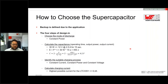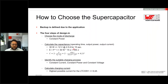Now the really interesting part: how to choose the passive components, especially the supercapacitor. The backup situation is defined by the application, so there is a design-in process with four steps. First, choose the discharge mode — in our case it's constant power. Second, calculate the capacitance: we need 30 watts at 12 volts and 2.5 amps for at least 15 seconds, which gives us 450 joules needed. The cutoff voltage is 2 volts and the maximum bank voltage is 10.6 volts, from which we derive the required capacitance.